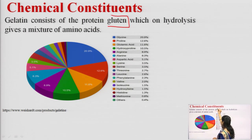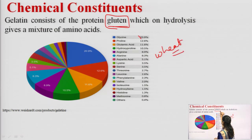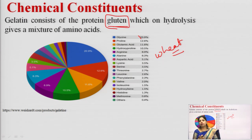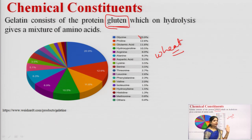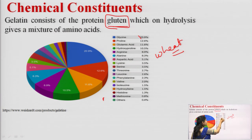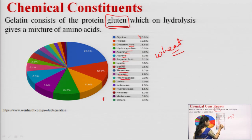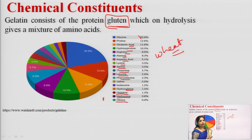Regarding chemical constituents, gelatin consists of the protein gluten. Generally, gelatin contains gluten protein — similar to what our wheat contains. On hydrolysis, it gives a mixture of about 15 to 20 essential amino acids, including glycine, proline, glutamic acid, hydroxyproline, arginine, alanine, aspartic acid, lysine, serine, threonine, leucine, phenylalanine, valine, isoleucine, hydroxylysine, histidine, methionine, and others. These are the different amino acids obtained after hydrolysis of gelatin.